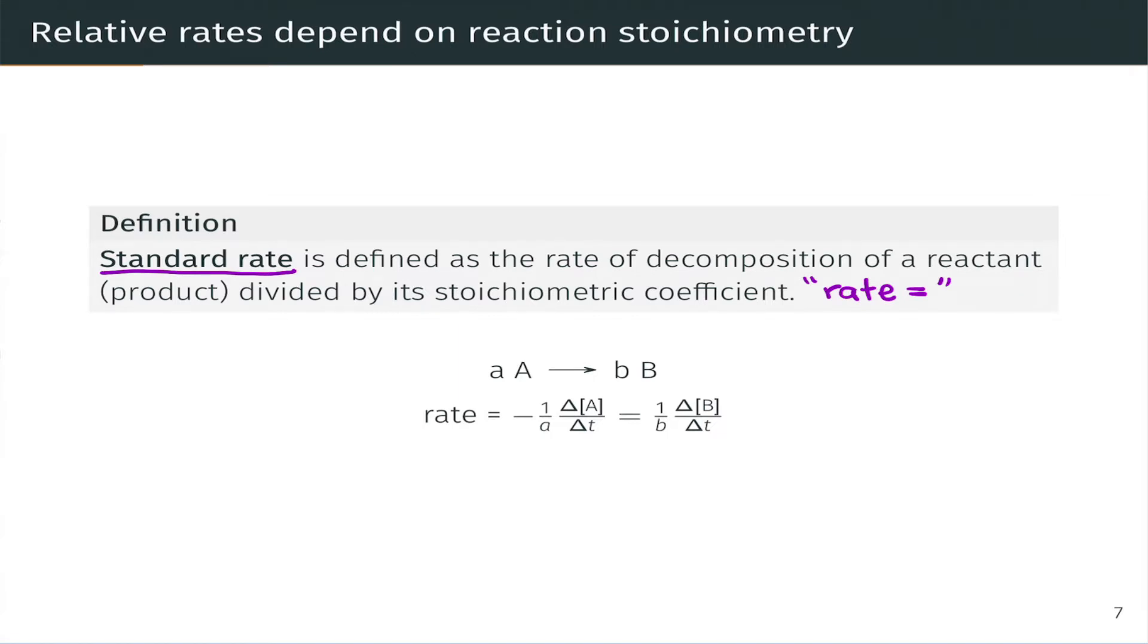The standard rate is defined as the rate of decomposition of a reactant or production of a product divided by the stoichiometric coefficient of that species.